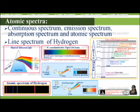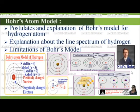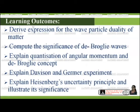In session 2.4 we discussed continuous spectrum, emission spectrum, absorption spectrum, atomic spectrum, and line spectrum of hydrogen atom. In session 2.5 we discussed the postulates and explanation of Bohr's atom model for hydrogen atom, explanation of the line spectrum of hydrogen atom, and limitations of Bohr's model.